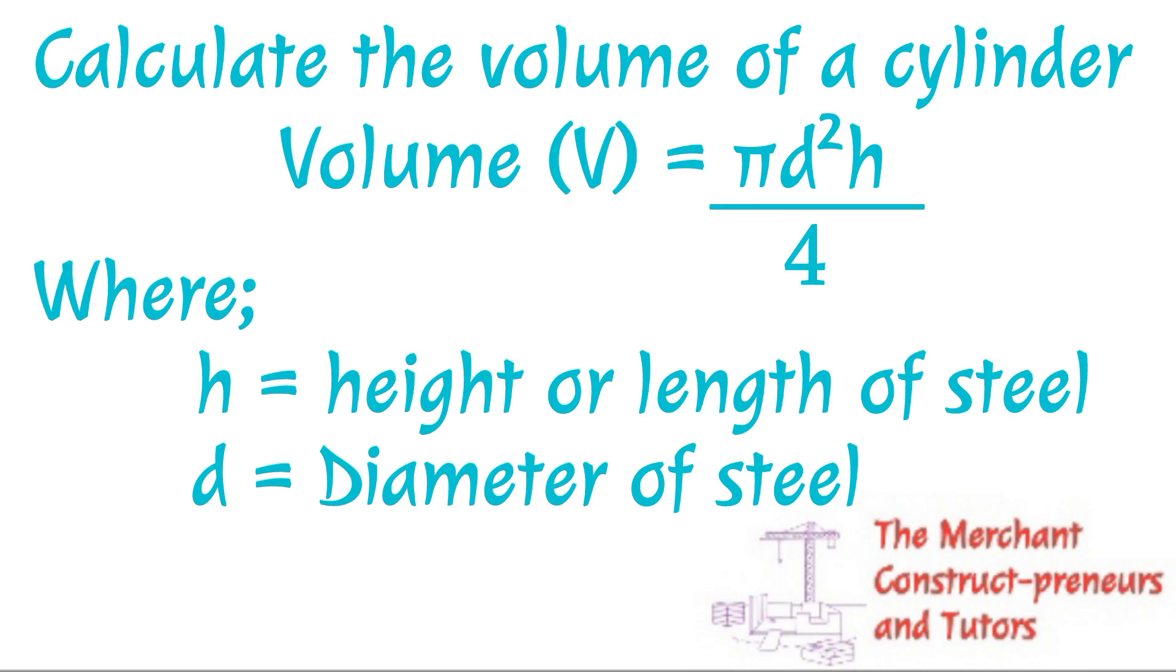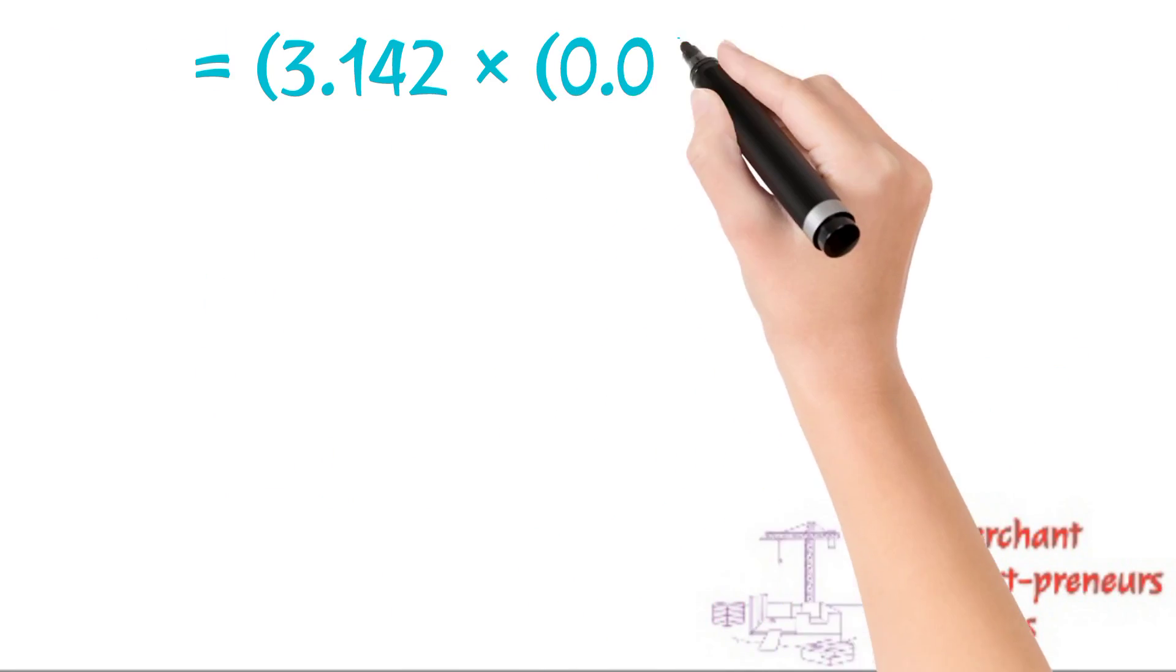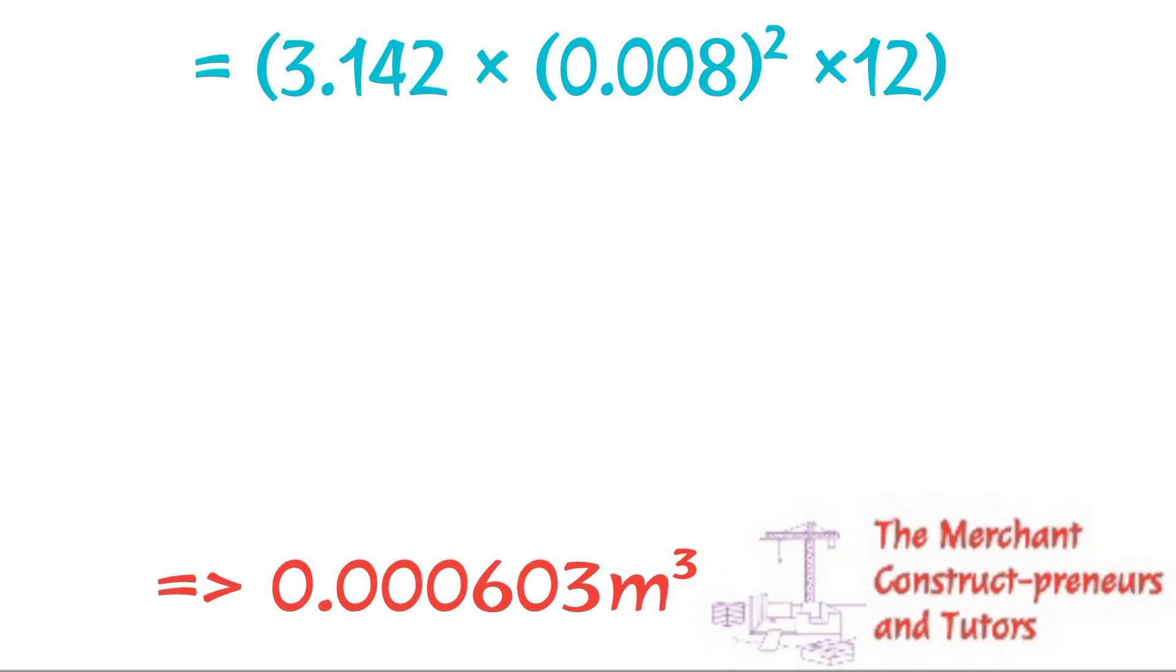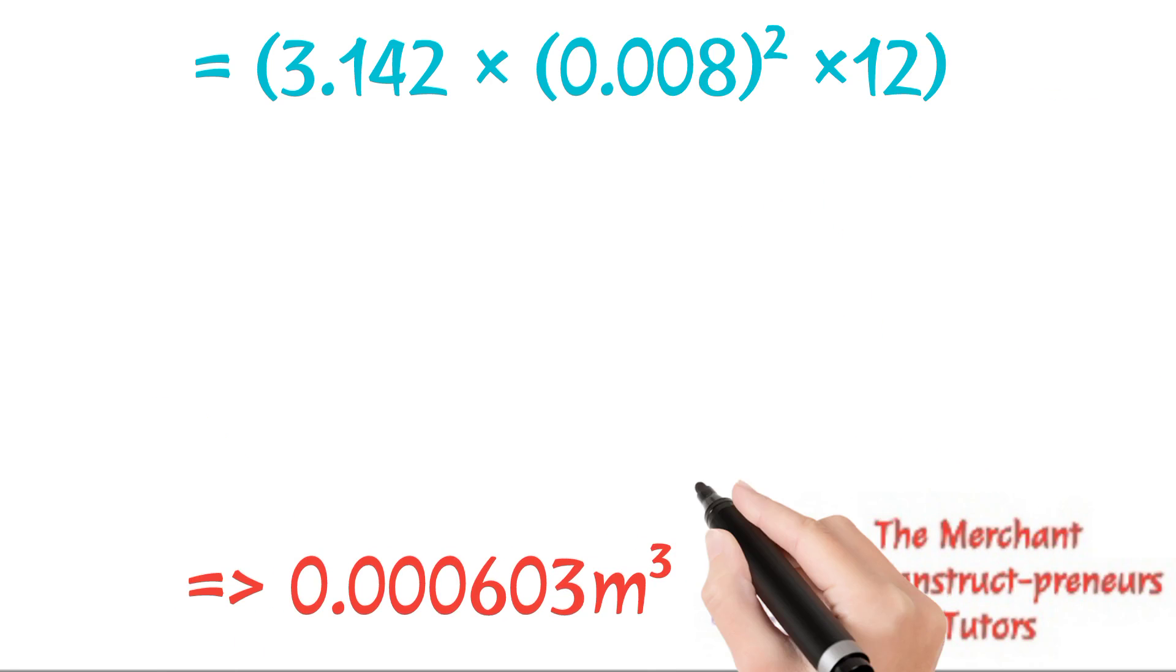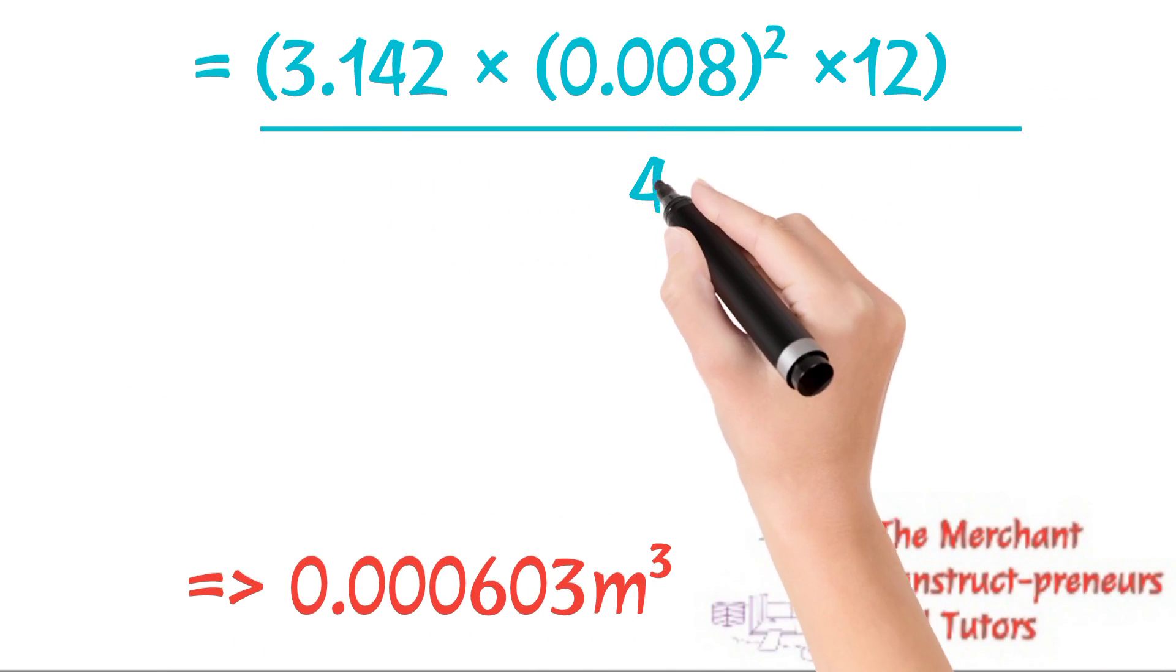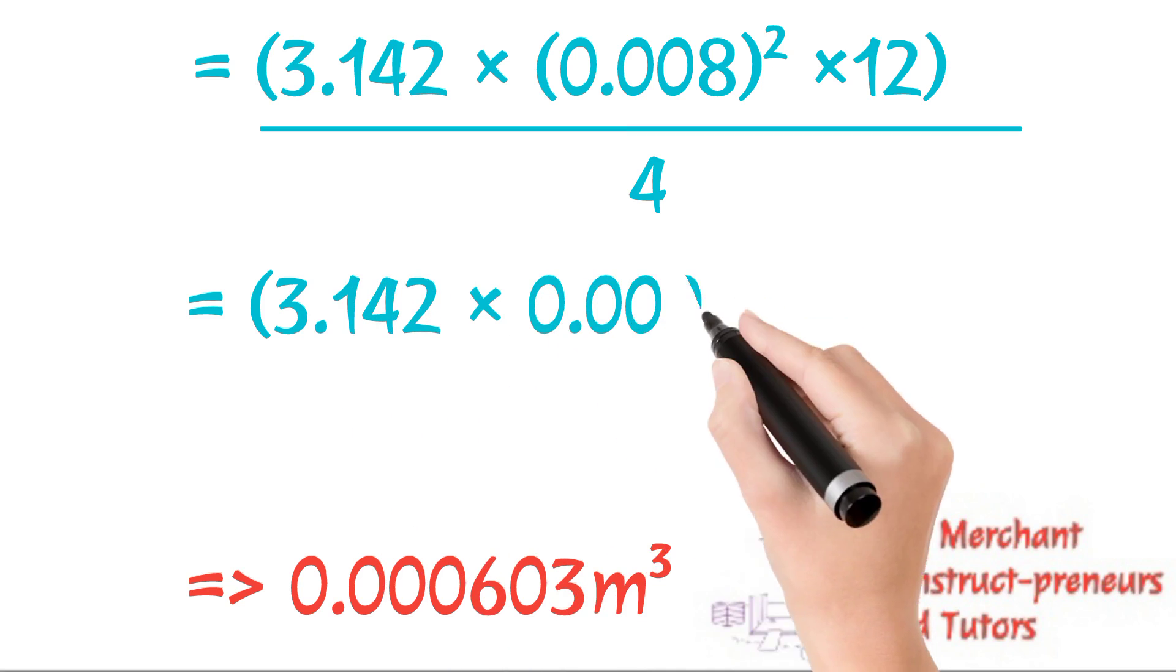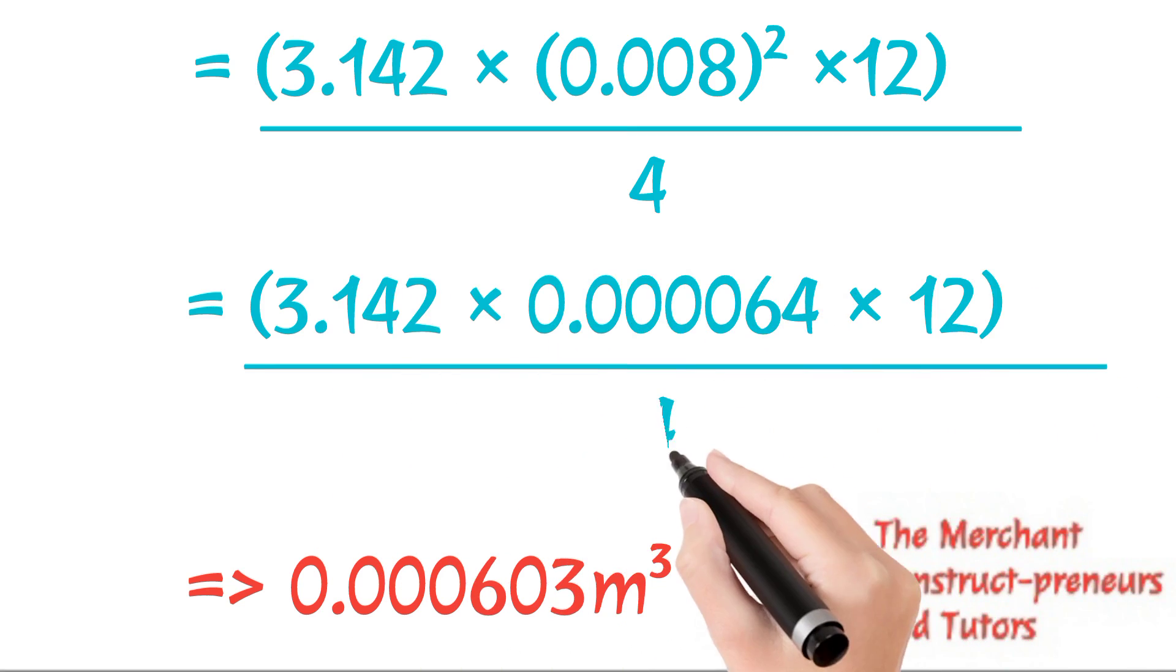So inserting these values where d is the diameter 0.008 in the formula, and also h which is 12 meters in the formula, we have it as 3.142 multiplied by 0.008 squared, multiplied by 12, divided by 4. So calculating this using your calculator, you have your answer as 0.000603 cubic meters. That is the volume of the reinforcement, the volume of one length of 8 millimeter reinforcement: 0.000603 cubic meters.